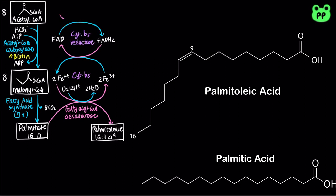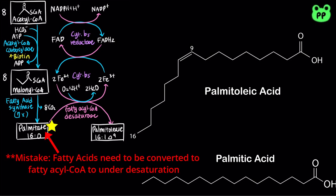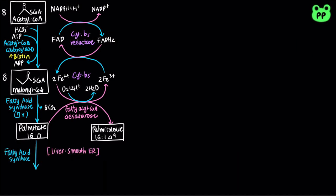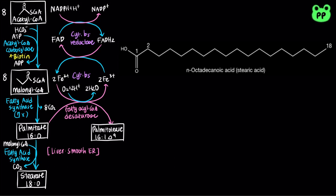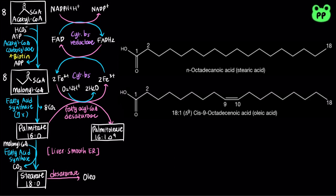FAD is ultimately reduced to FADH2 by coupling to the oxidation of NADPH to NADP+. Therefore, the net reaction involves simultaneous oxidation of fatty acyl-CoA and NADPH and the reduction of oxygen to water. Likewise, the 18-carbon saturated fatty acid, stearate, can be desaturated at the 9th carbon by fatty acyl-CoA desaturase to produce oleate.